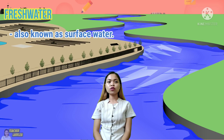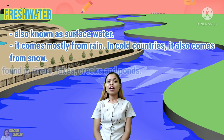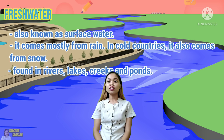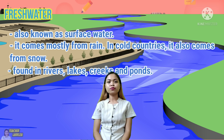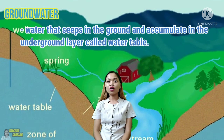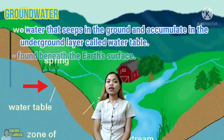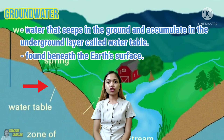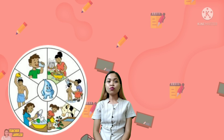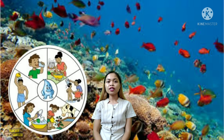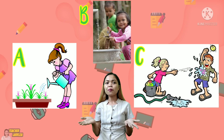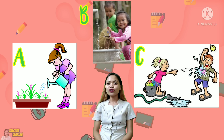Freshwater is also called surface water and it comes mostly from rain. It is found in rivers, lakes, creeks, and ponds. In cold countries, freshwater also comes from snow. Groundwater is the water that seeps into the ground and accumulates in the underground layer of the soil called the water table. Groundwater is found beneath the Earth's surface. Water can be used in many ways and it serves as a home to all marine animals. For a quick review, can you identify which of these pictures show proper use of water in our daily activities? Comment down your answers below this video.